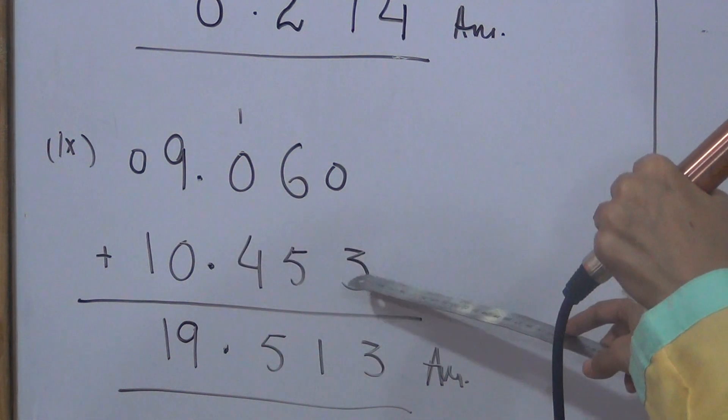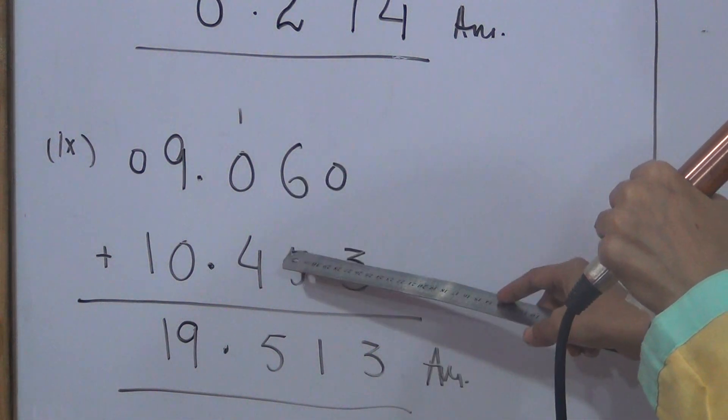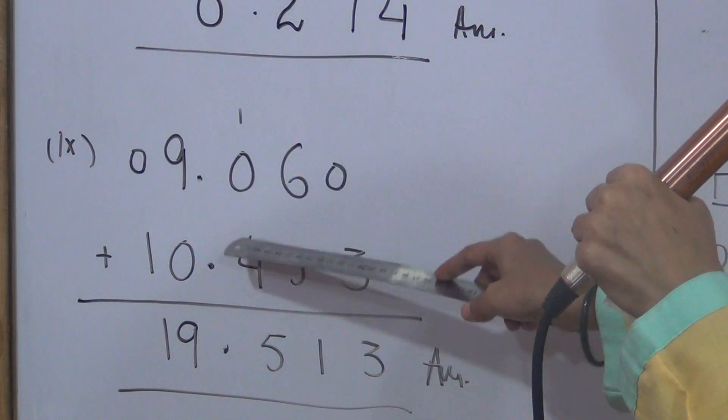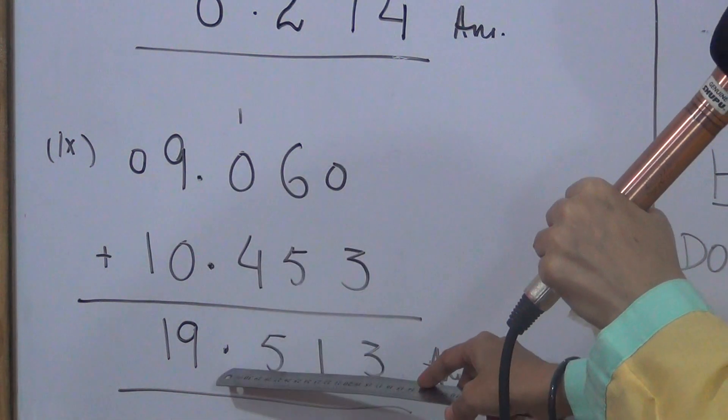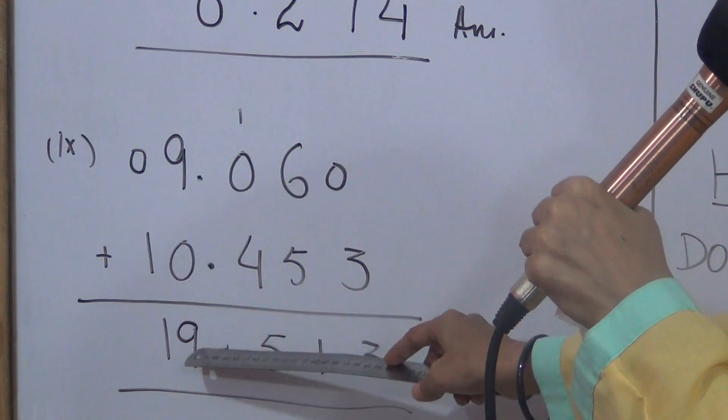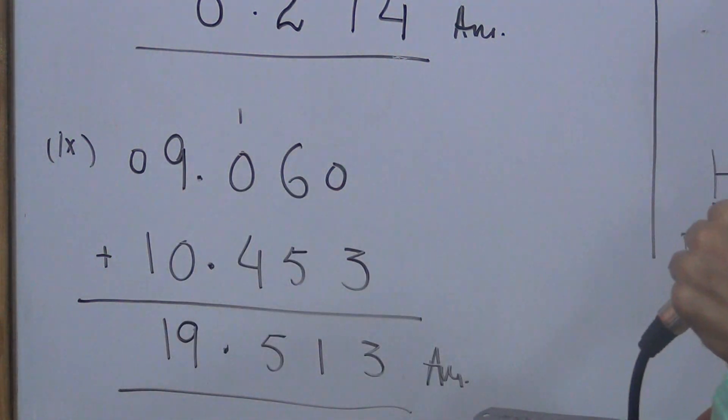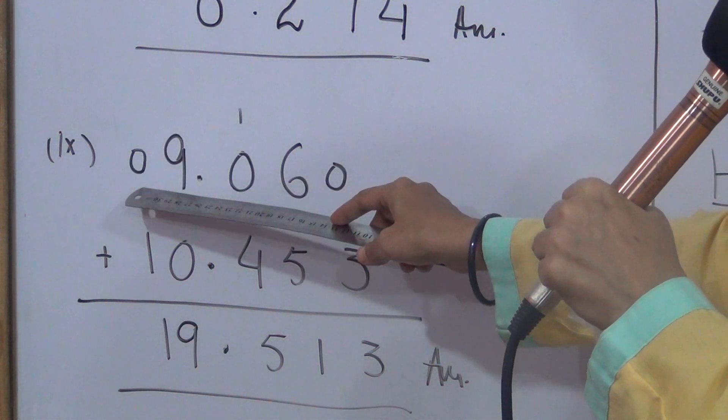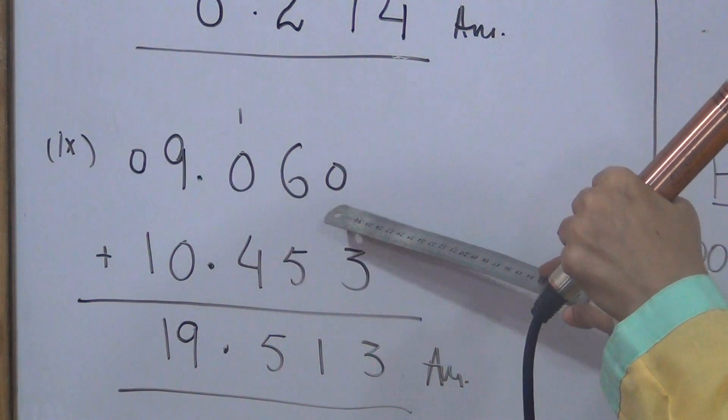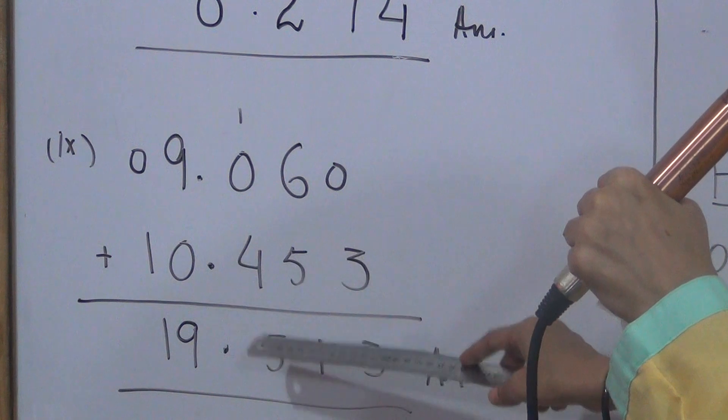Now add these values. Three plus zero is three. Six plus five is eleven, one carry. Four plus one is five. Five, decimal below decimal. Nine plus zero is nine. Zero plus one is one. What we have done here is we filled the zero in empty places. Wherever there was an empty place, we filled zero. And then we did addition because we have to line up the decimal point.